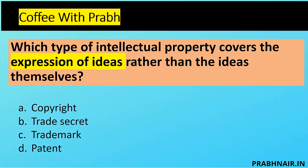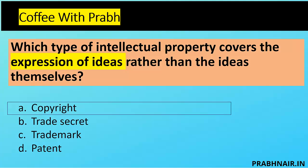Next coffee short: which type of intellectual property covers the expression of idea rather than ideas themselves? Ideas themselves are protected under patent. Trade secret is internal to the organization. Patent protects the idea. So the only option left is copyright. Copyright covers the expression of idea rather than ideas themselves, because ideas themselves are protected under patent. The answer is A — copyright.